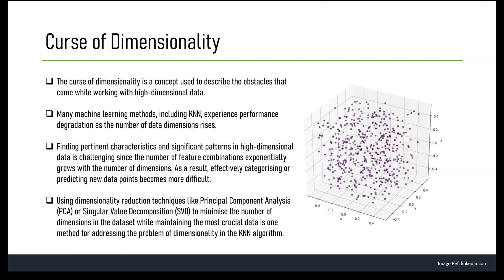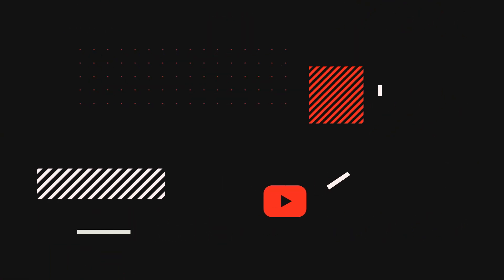As the number of dimensions increases, the number of neighbors required to get a good estimate of the true underlying data density also increases exponentially, which can be computationally expensive. To mitigate the curse of dimensionality in KNN, one approach is to use dimensionality reduction algorithms like PCA or SVD (Singular Value Decomposition) to reduce the number of dimensions while preserving the most important information. Another approach is to use feature selection techniques to identify the most relevant features and discard irrelevant or redundant ones. Hope you understood the challenges KNN faces — see you in the next video.